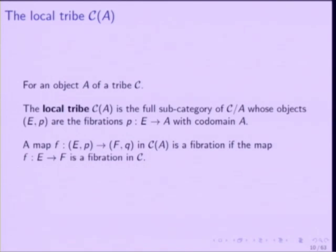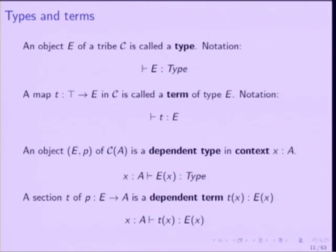If you have a tribe, you can define the local tribe at an object A. It's simply the full subcategory of the slice category C over A whose objects are the fibrations with codomain A. There is a tribe structure there where a map in C_A is a fibration if the underlying map in C is a fibration. This is a very familiar kind of construction if you work with Quillen model structures. An object of a tribe is called a type—it's just a change of terminology.